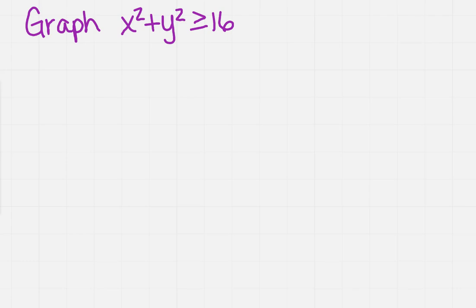And when we did the formula of the circle before, whatever's added to x and y is going to be the origin. Well, in this case, there's nothing added to it, so the center is going to be at 0, 0.